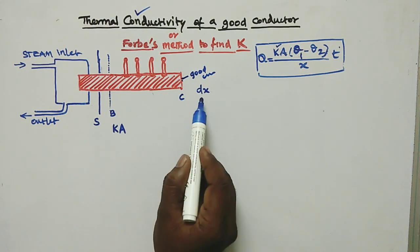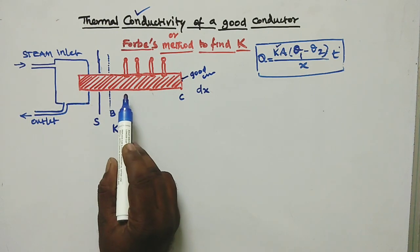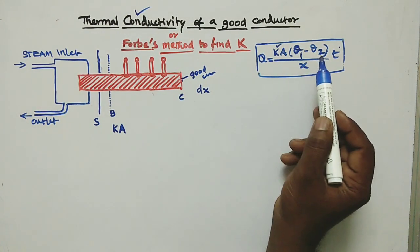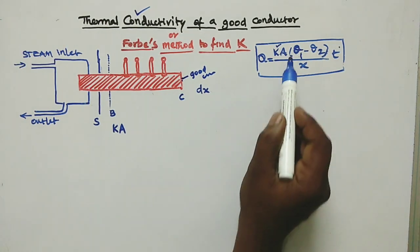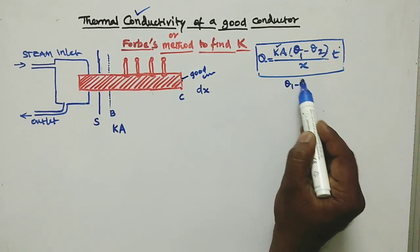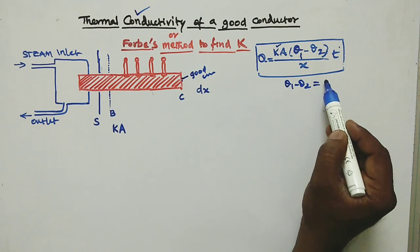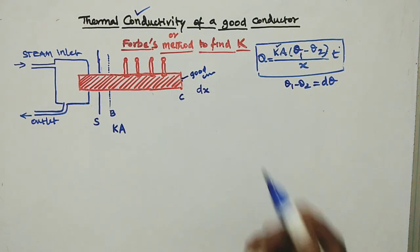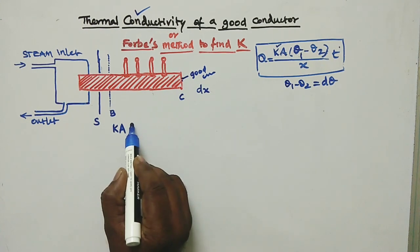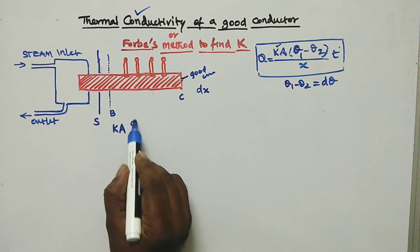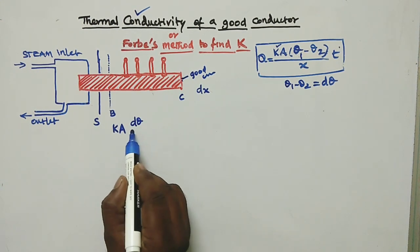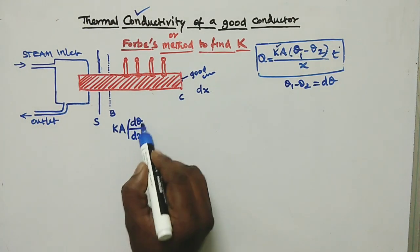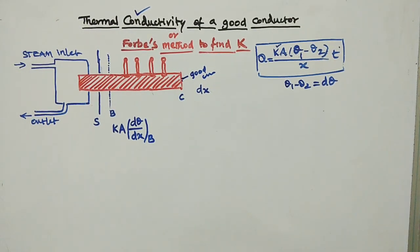Now, what is the dx distance? If we consider θ₁ and θ₂, the temperature difference is θ₁ minus θ₂. That is why dθ/dx is evaluated at point B.